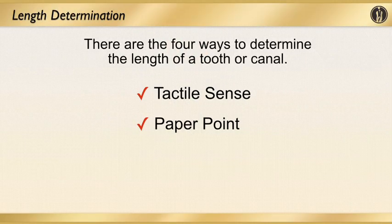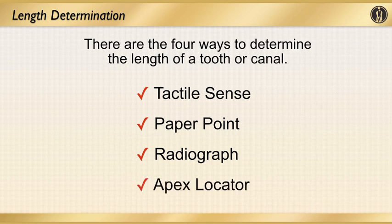Another way to look at length control is by a radiograph, which we're going to go over in a few minutes. And the last way to look at it is the apex locator.